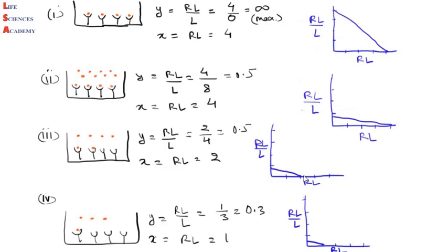In the case of high affinity receptors, the receptor gets saturated at high ligand concentration: the slope is quite high and then decreases with an increase in ligand concentration. I hope you have benefited from this tutorial on the Scatchard plot. Thank you for watching this video and stay with us for more videos.